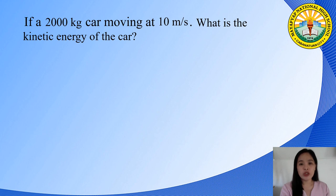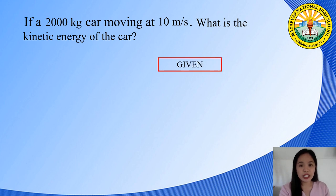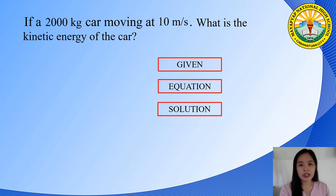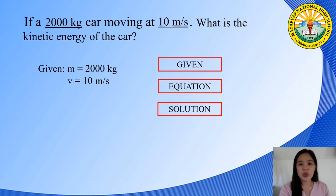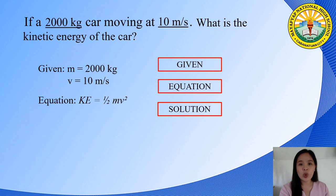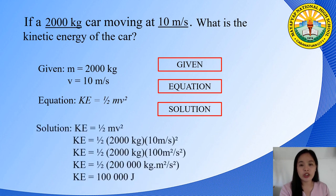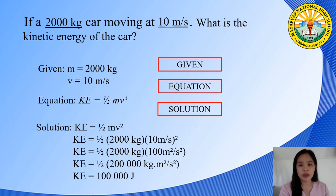Let's apply problem-solving steps again. If a 2,000-kilogram car is moving at 10 meters per second, what is the kinetic energy of the car? Identify the given: mass = 2,000 kg and velocity = 10 m/s. The equation is KE = ½mv². Substituting the values, the kinetic energy of the car is 100,000 Joules.